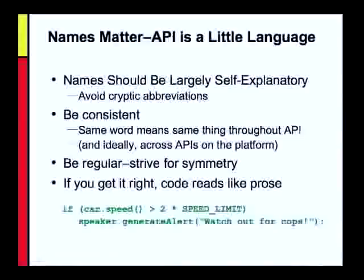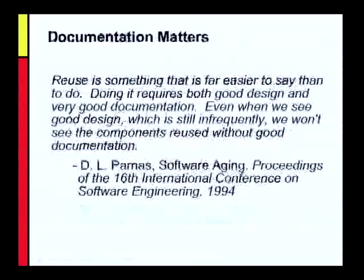If you get it right, the code will read like prose. For example: 'if the car's speed is more than twice the speed limit, then the speaker should generate an alert that says watch out for cops.' That's pretty much English. It reads like prose, and that's an indication that the API is reasonably decent.